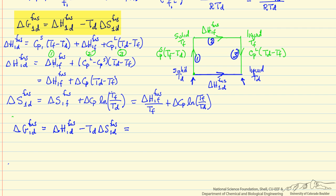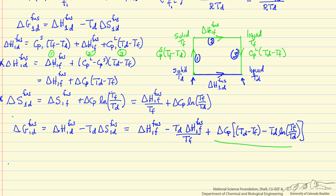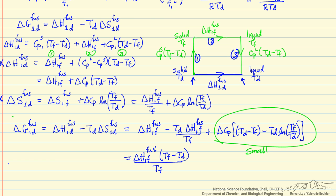Rewriting the Gibbs free energy definition and substituting back the expressions for delta H and delta S of fusion, after rearrangement I assume the delta Cp term is small compared to the first two terms. Factoring out delta H of fusion and using a common denominator of Tf, we arrive at a simplified expression, ignoring the smaller terms.